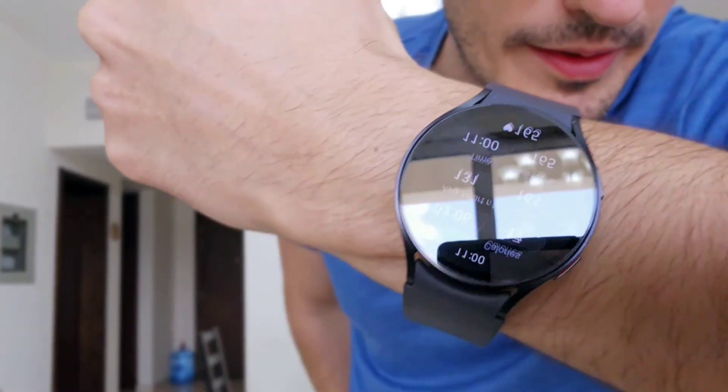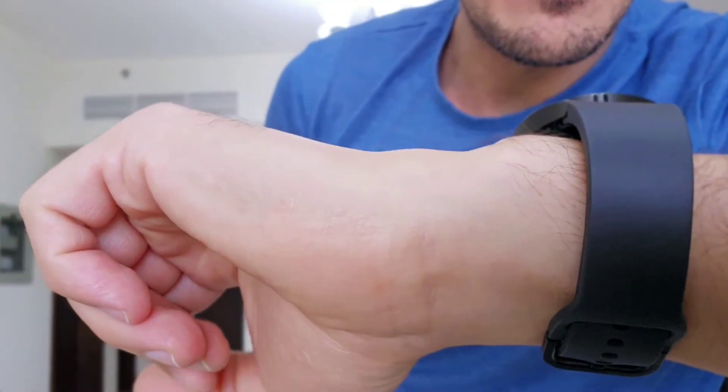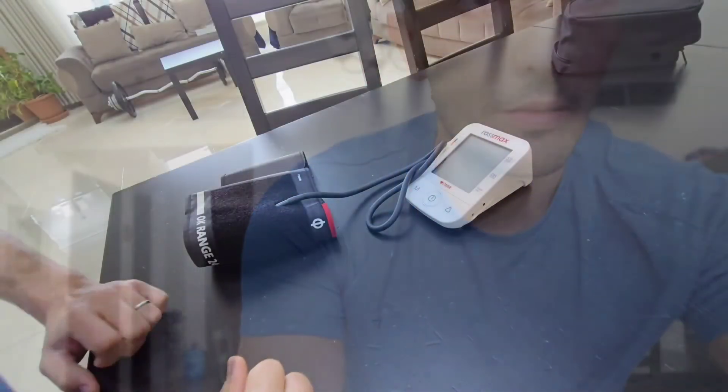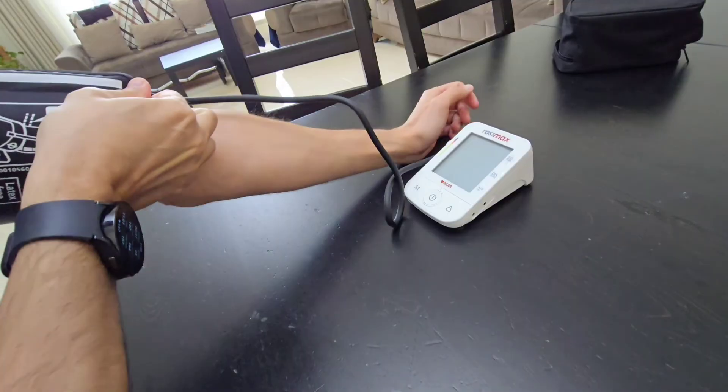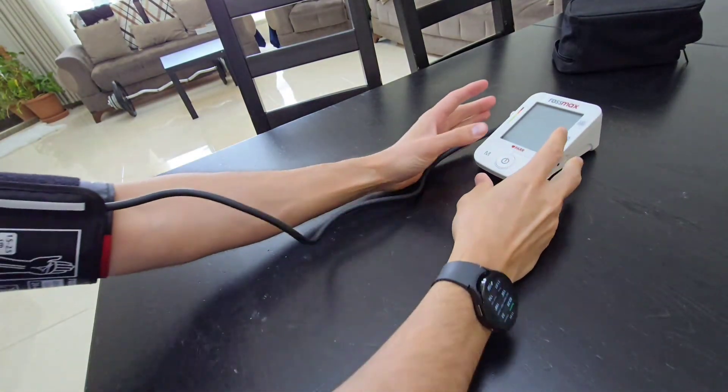Okay, we got a heart rate of 165, 166. Let's quickly go and measure my blood pressure. You can see I'm still panting and the blood pressure should be higher because of exercise.